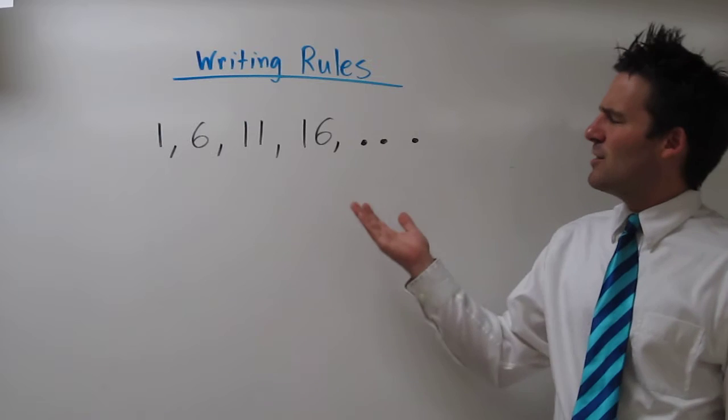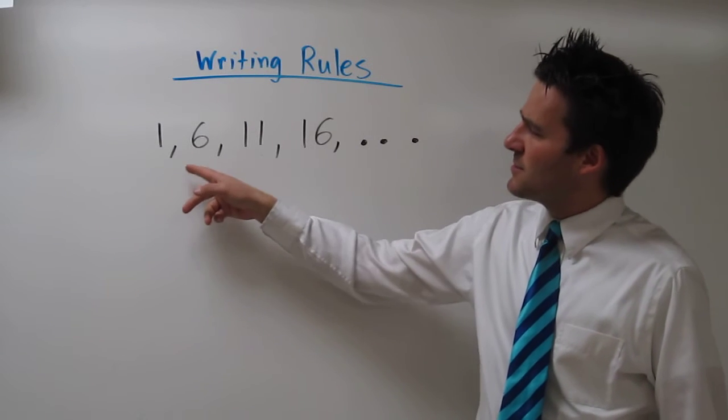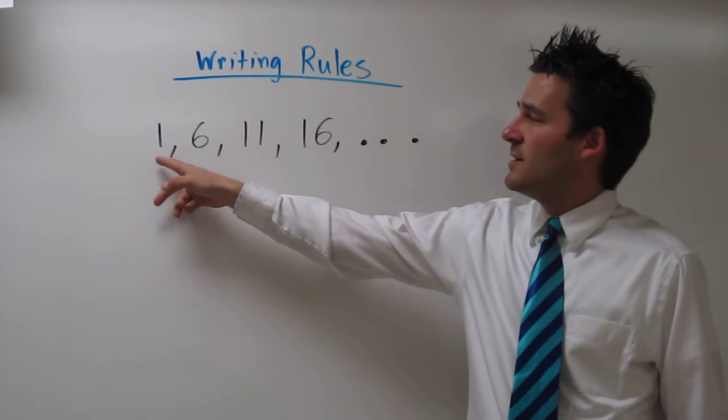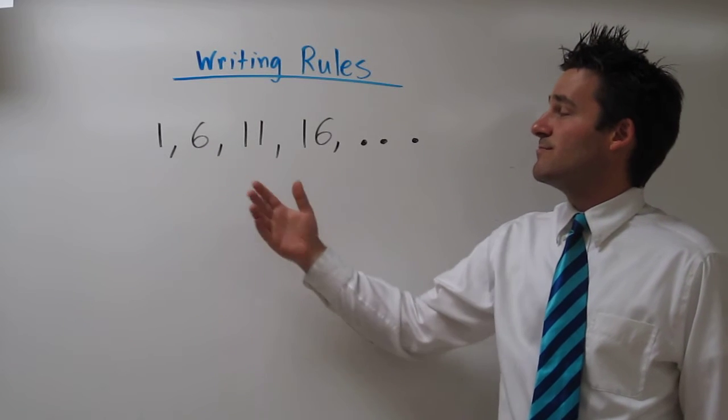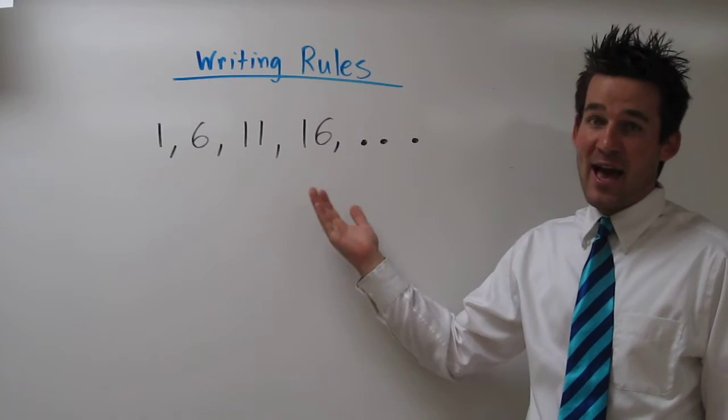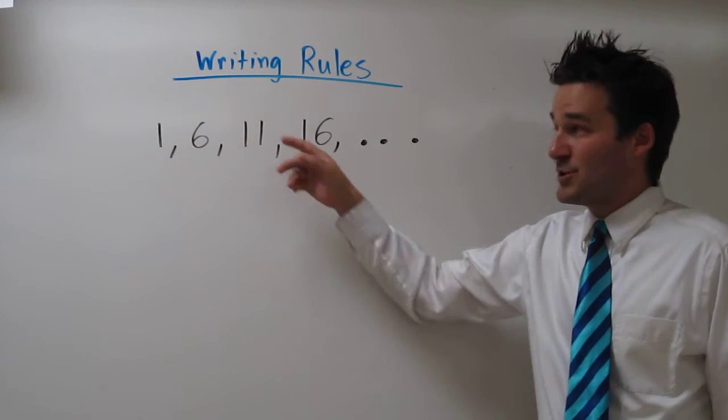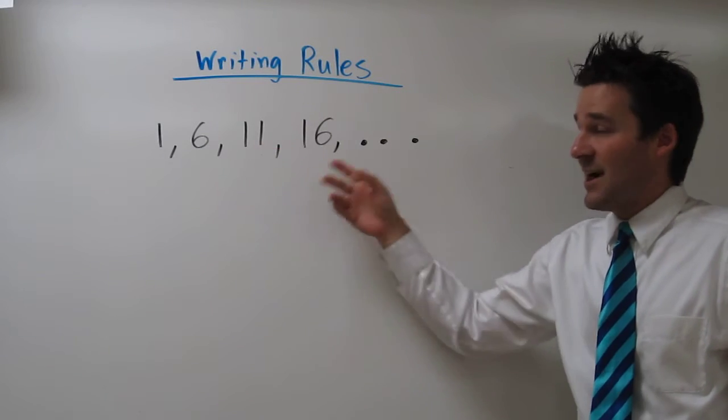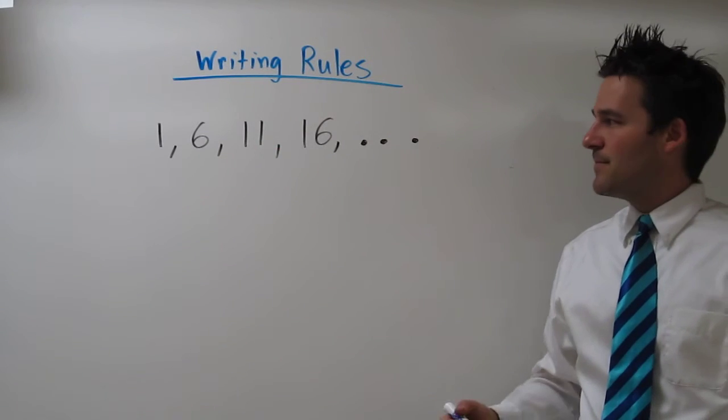By looking at it, we can see each of these numbers is increasing by 5. To get from 1 to 6, we increase it by 5. To get from 6 to 11, we add 5. 11 to 16, we add 5.